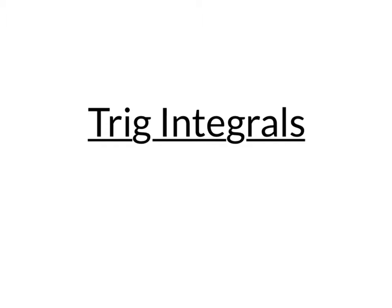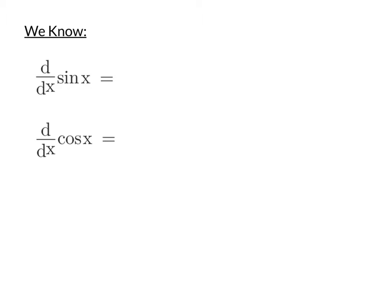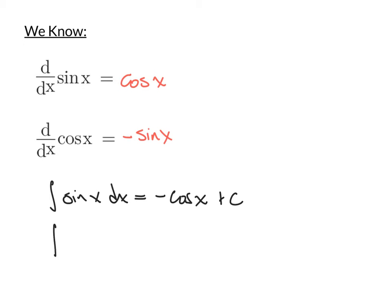Let's find the integrals of all six of the trig functions. First, the two easiest ones. We know the derivative of sine is cosine and the derivative of cosine is negative sine. That means the integral of sine is negative cosine plus C, since the derivative of negative cosine is sine. And the integral of cosine is sine, since the derivative of sine is cosine.